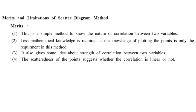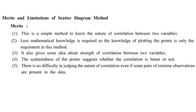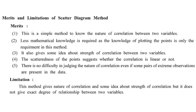The scatteredness of points suggests whether the correlation is linear. There is no difficulty in judging — a glance at the graph immediately tells you which of the five types applies. The one limitation is that it only gives the nature of correlation, not the exact numerical value, making it unsuitable for precise statistical inference and analysis.